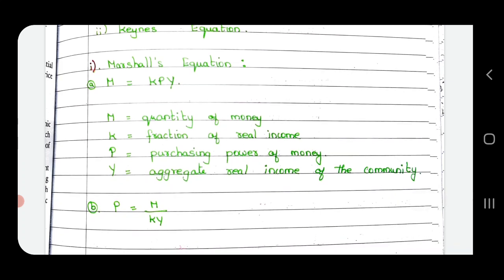Marshall's equation: M is equal to KPY. M is quantity of money. K is fraction of real income. P is purchasing power of money. Y is aggregate real income of the commodity.